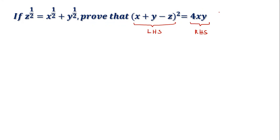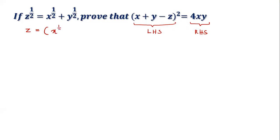That means we need to substitute z and make it disappear. The given information provides z to the power of 102, which is actually a square root. So I can rearrange it: z equals the square root of (x^(1/2) + y^(1/2))^2. This way, later we can substitute z inside our equation.